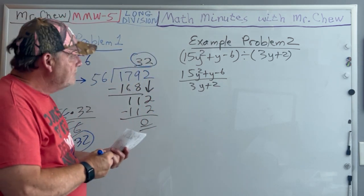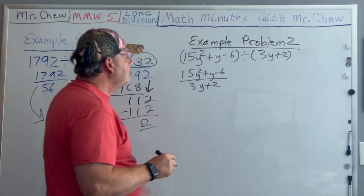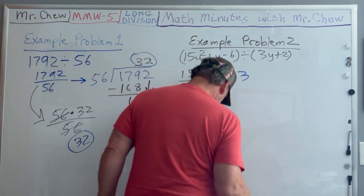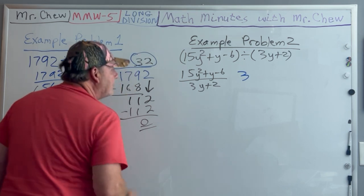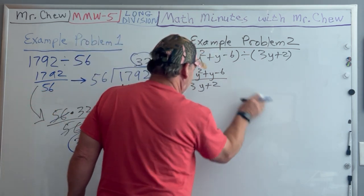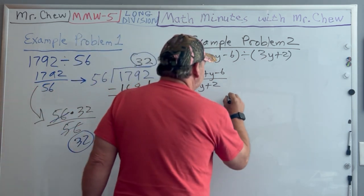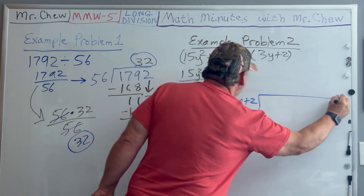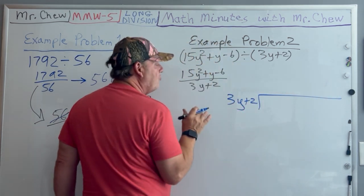Let's see how that works. I take 3y + 2—I'm gonna want to write something over here in a minute—so we'll do 3y + 2 divided into this trinomial 15y² + y - 6.